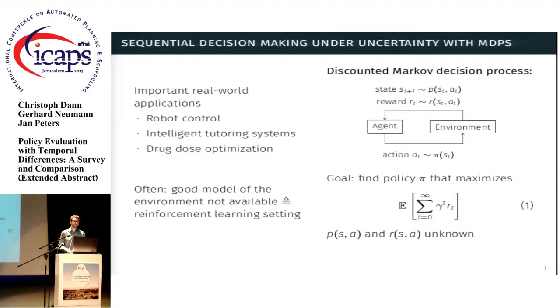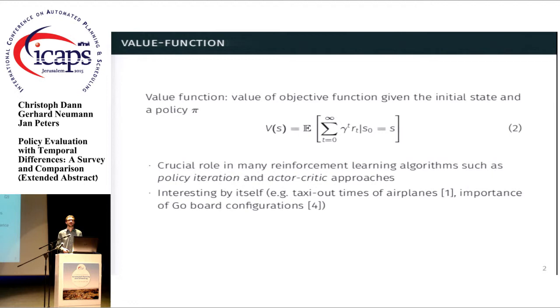The value function is an important quantity. It tells us the value of this objective function that we want to optimize, given the initial state and the policy π. For each state, it tells us the expected sum of discounted rewards. It's so important because it plays a crucial role in many reinforcement learning algorithms, such as policy iteration or actor-critic approaches. But sometimes it's also of interest by itself, because we can use it to estimate interesting quantities, such as taxi-out times of airplanes at airports.